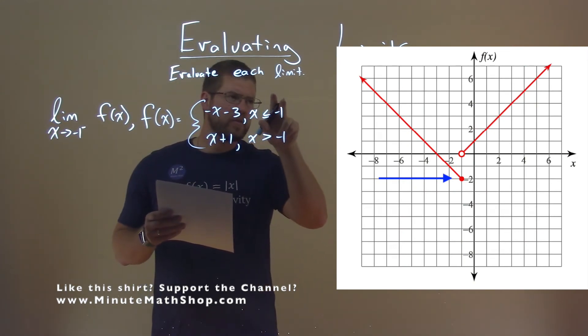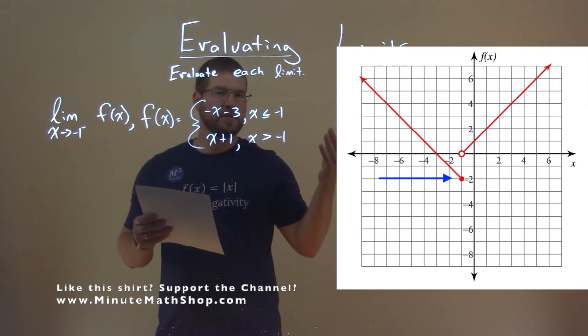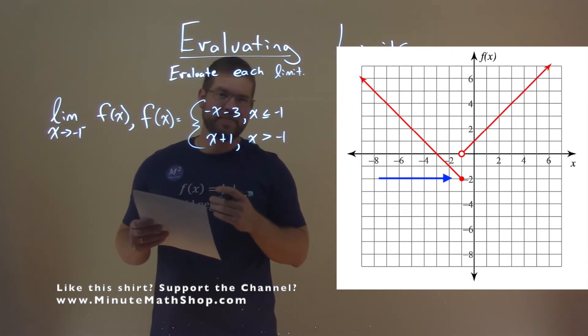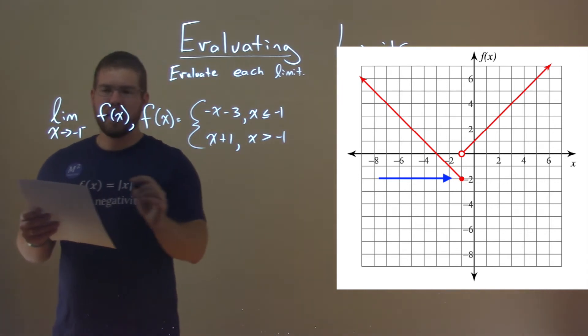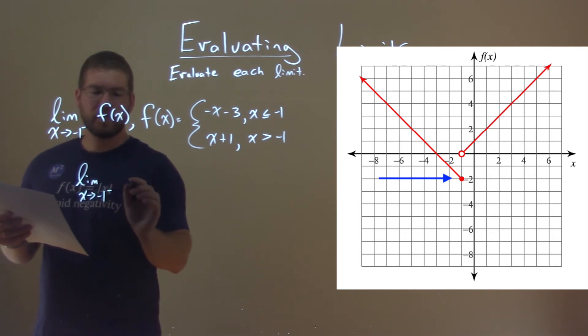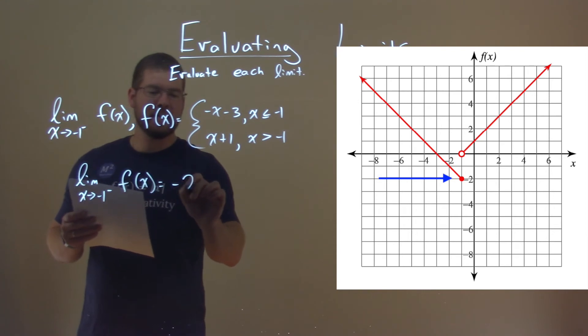When x gets closer and closer to negative 1 from the left-hand side, our y value approaches negative 2. So we see that's the y value there. We would say that our limit here as x approaches negative 1 from the left of f(x) is equal to negative 2.